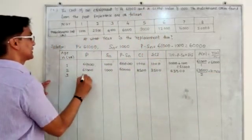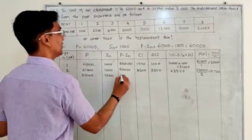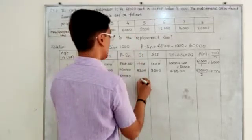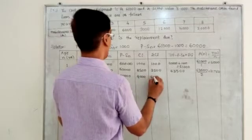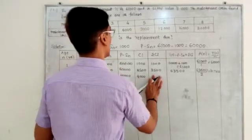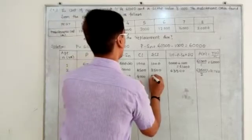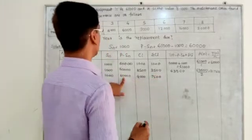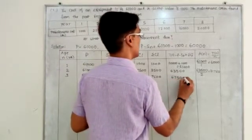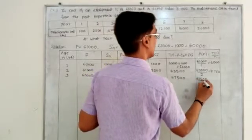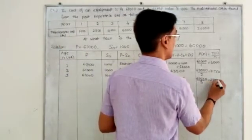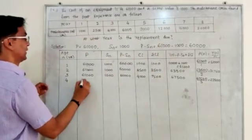For the third year: P minus S_N is again 60,000 fixed. C_I is 4,000, and cumulative C_I is 3,500 plus 4,000 equals 7,500. So 60,000 plus 7,500 is 67,500, and 67,500 divided by 3 is 22,500.